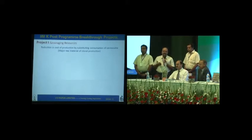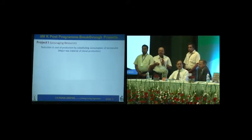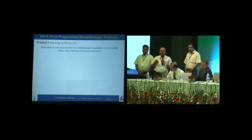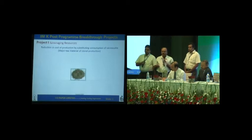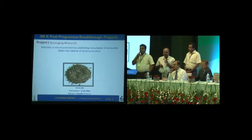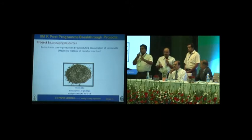Vermiculite is a major material which has been used by all paper industries for a long time. It is a very costly material, available only from mines, with very rare availability and very few suppliers. Previously, our media consumption was 25 to 30 grams per plant and cost was 30 to 40 paisa per plant.